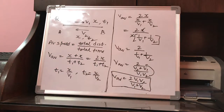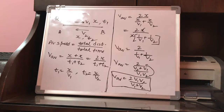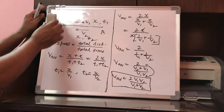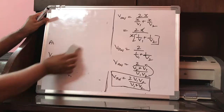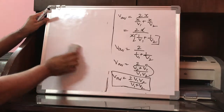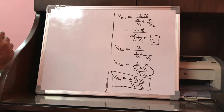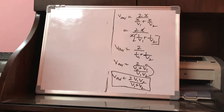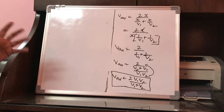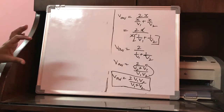So the formula for average speed in this case is 2v1v2 upon v1 plus v2. We have seen earlier that in the first problem, where the speed is v1 during the first half time and v2 during the second half time, the average speed came out to be v1 plus v2 divided by 2. But in this problem and similar ones, the average speed is 2v1v2 upon v1 plus v2.